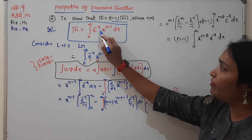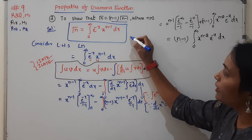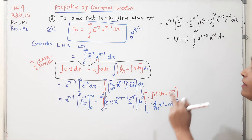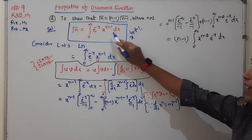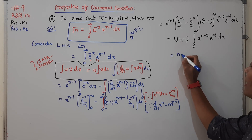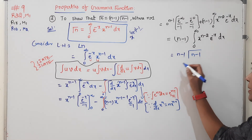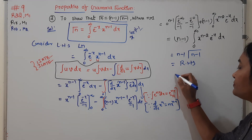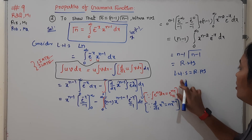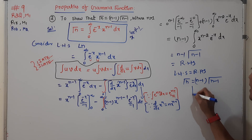The e term vanishes, giving zero. That means we have n minus 1 into the integral from 0 to infinity of x to the power of n minus 2 times e to the power of minus x, dx. By the gamma definition, this integral is gamma(n minus 1). Therefore gamma(n) equals n minus 1 into gamma(n minus 1). Hence, LHS equals RHS — it is proved.